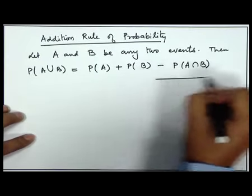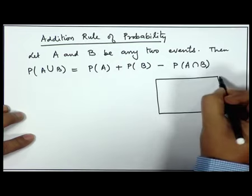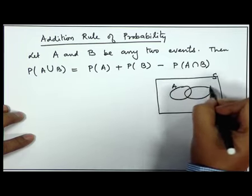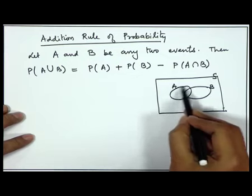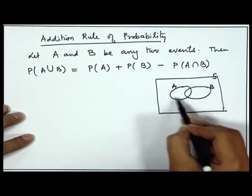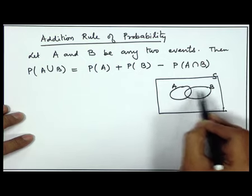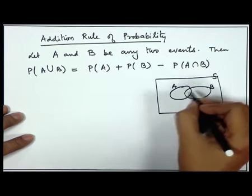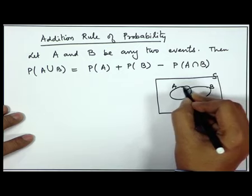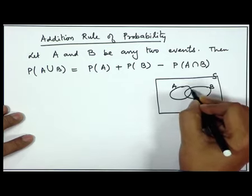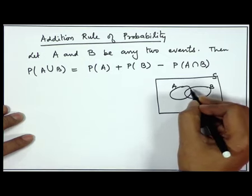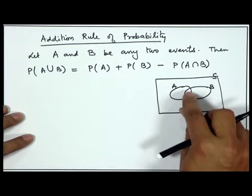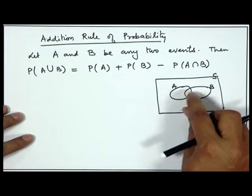I will explain through the Venn diagram. Consider the sample space with two events A and B. The probability of A∪B — the entire region — equals probability of A plus probability of B minus probability of A∩B. This is because the A∩B term has been added twice: it is included in A and also included in B. So when we say P(A) + P(B), we are adding P(A∩B) two times; therefore we remove it once.